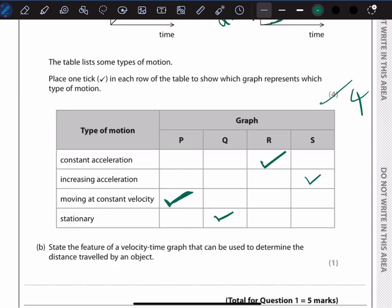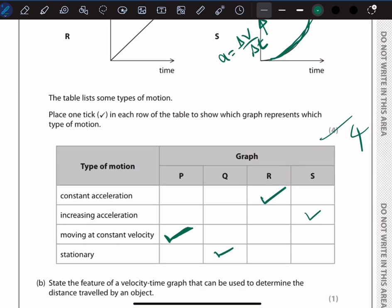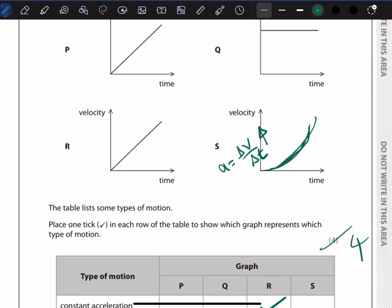We need to state the feature of a velocity-time graph that can be used to determine the distance traveled by an object. Let's look at the velocity-time graph. We know that the acceleration is the change in velocity over time, so the gradient represents acceleration. There is one thing